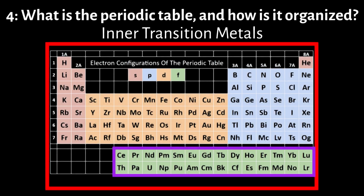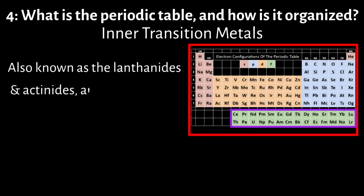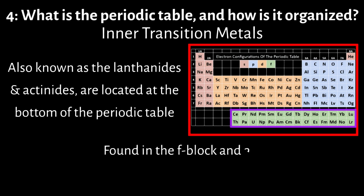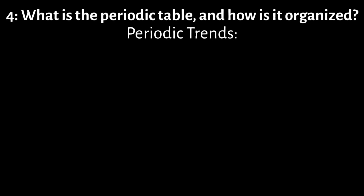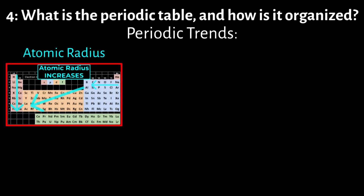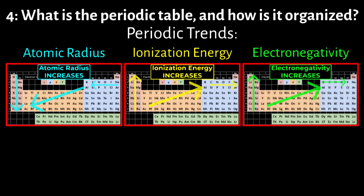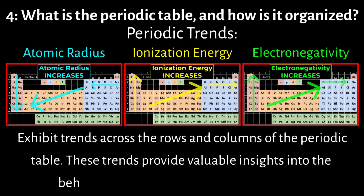The inner transition metals, also known as the lanthanides and actinides, are located at the bottom of the periodic table in the F-block, characterized by the filling of F-orbitals. Various properties of elements such as atomic radius, ionization energy, and electronegativity exhibit periodic trends across the rows and columns of the periodic table. These trends provide valuable insights into the behavior of elements and their compounds.